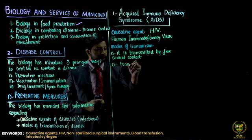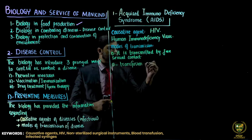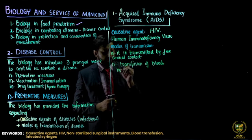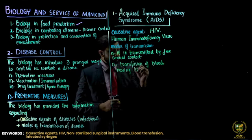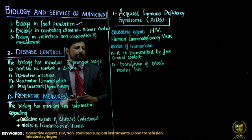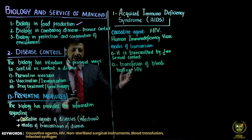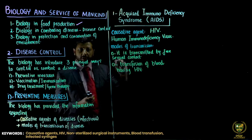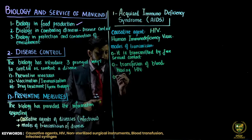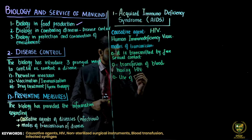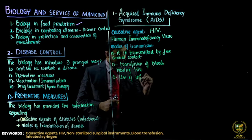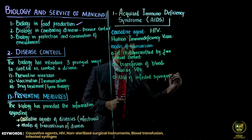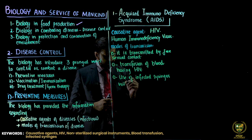The second mode of transmission is by transfusion of blood having HIV. If a person has HIV and their blood is transfused to another person, AIDS will spread to that other person — the recipient will contract it. Similarly, the third mode is the use of infected syringes with HIV.